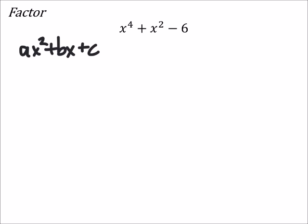So what I'm going to say here is, because x to the fourth is x squared squared, and then I've got plus x squared, and then I've got the minus six. So I'm just changing it to look a little bit more like what we're used to with this ax squared plus bx plus c.